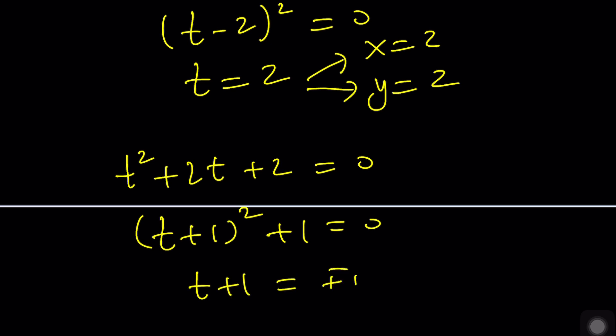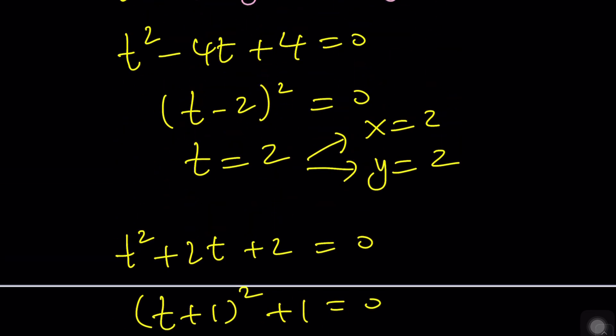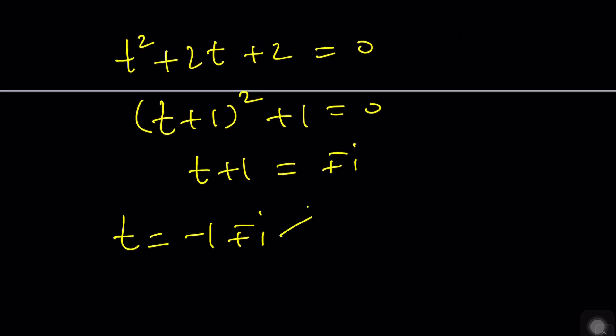and T becomes negative 1 plus minus I. But what is T? T is X or Y. So if X is negative 1 plus I, Y is negative 1 minus I, and vice versa. Of course, they can switch around as well. Okay?